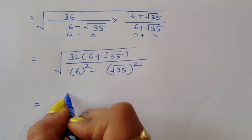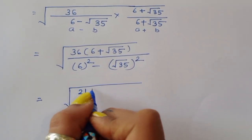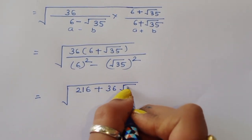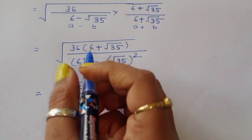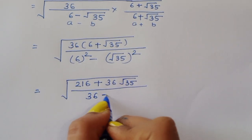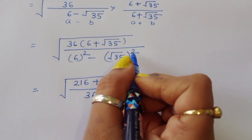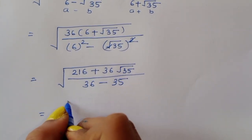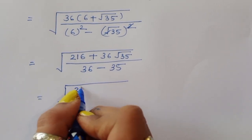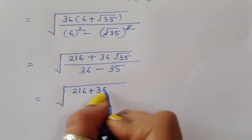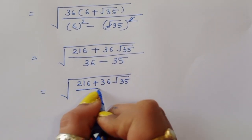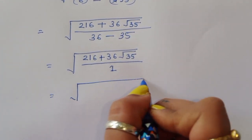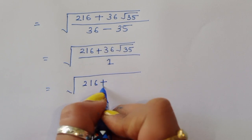The numerator becomes 36 times 6 plus 36 times square root of 35, which is 216 plus 36 square root of 35. The denominator is 6 squared minus (square root of 35) squared, that is 36 minus 35, which equals 1.